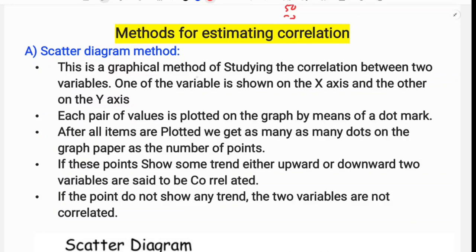The scatter diagram is a graphical method of studying the correlation between two variables. One variable is shown on the x-axis and the other on the y-axis. Each pair of values is plotted on the graph by means of a dot mark. After all items are plotted, if these points show some trend either upward or downward, the two variables are said to be correlated.